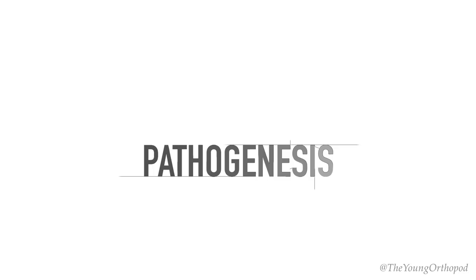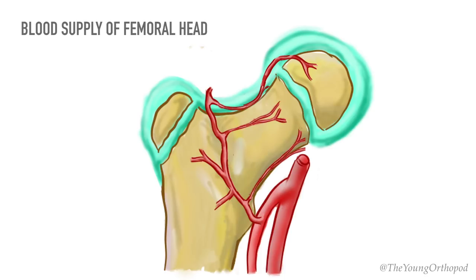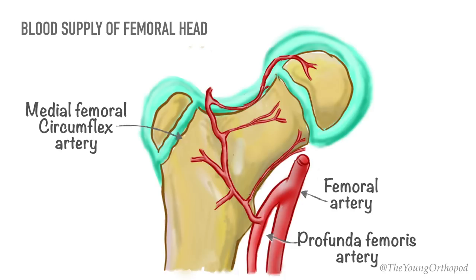Blood supply of the femoral head in this age group has a peculiar pattern. Between 4 to 8 years of age, the epiphysial plate becomes a firm barrier between the epiphysis and metaphysis, and the lateral epiphysial vessels are the only source to the epiphysis. To learn more about the blood supply of the femoral head and its variation with age, please check out our video on that topic — the link is in the description.